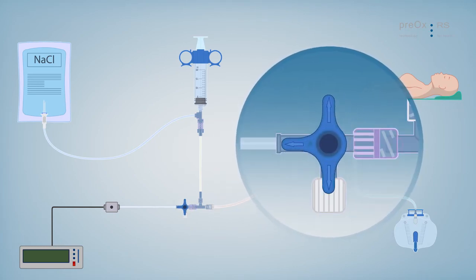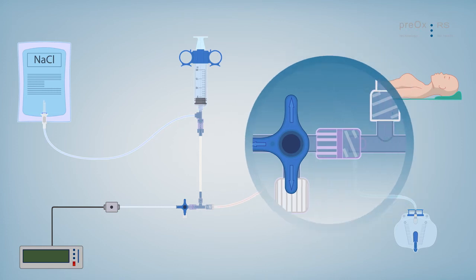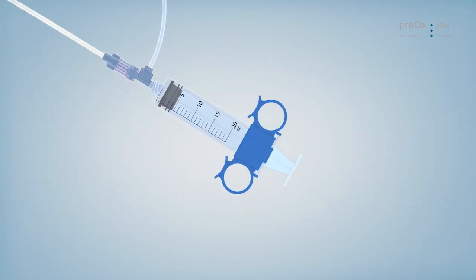Now close the three-way stopcock. Fill the syringe up to 20 ml by pulling back the plunger.